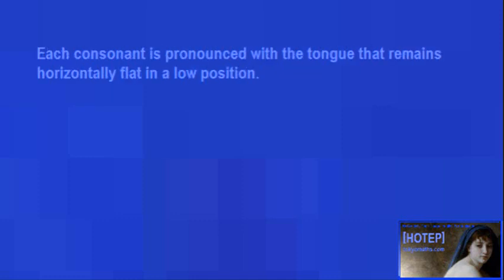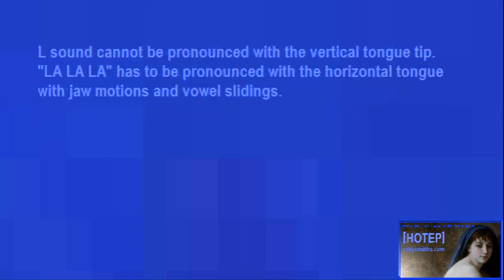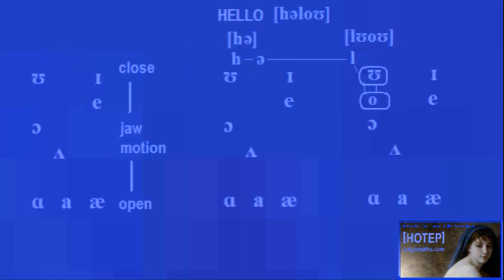Each consonant is pronounced with a tongue that remains horizontally flat in a low position. Often, an English teacher shows his tongue to explain the pronunciation of L. In his open mouth, the tongue must be vertical in order to show it is touching the upper front teeth, because he cannot show it with his mouth closed. However, the L sound cannot be pronounced with a vertical tongue tip. It has to be pronounced with the horizontal tongue with jaw motions and vowel sliding.